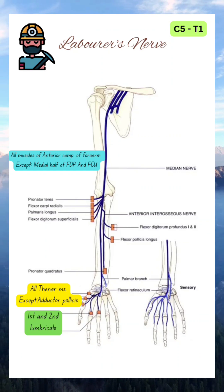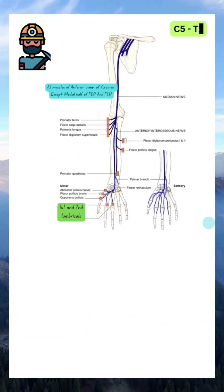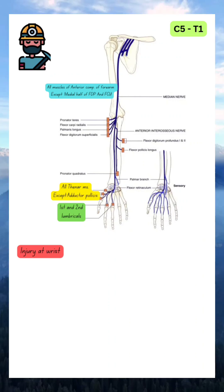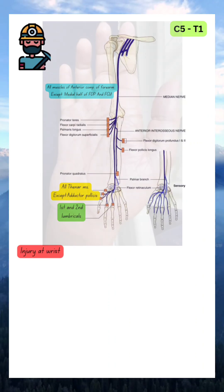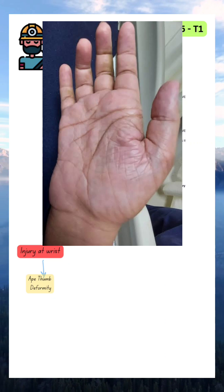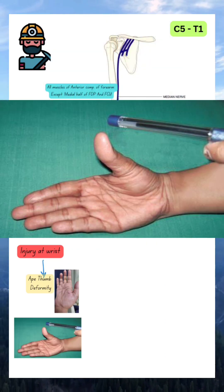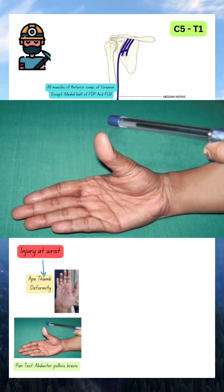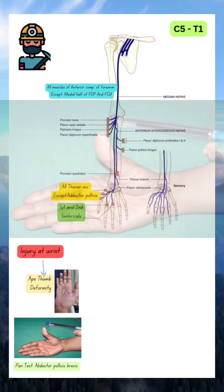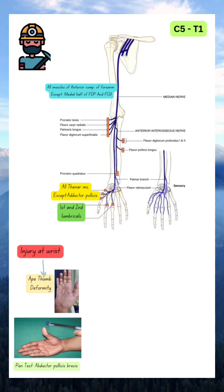Suppose injury is at the level of the wrist — for example, carpal tunnel syndrome. Here, all the thenar muscles are affected and there will be atrophy. That is why we can see ape thumb deformity. One test is called the pen test: the patient is asked to hold a pen. If they are not able to touch with the thumb, then the test is positive. The pen test is a test for abductor pollicis brevis.